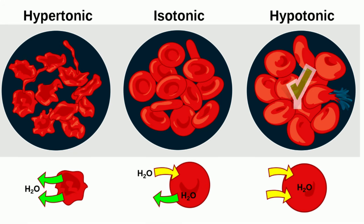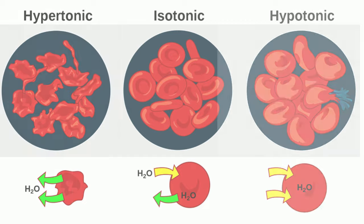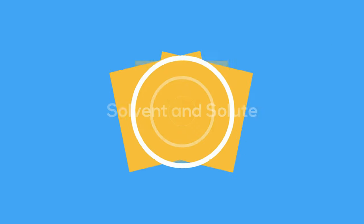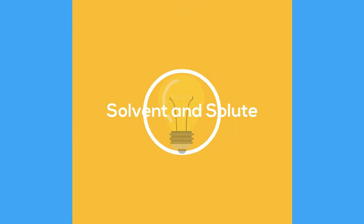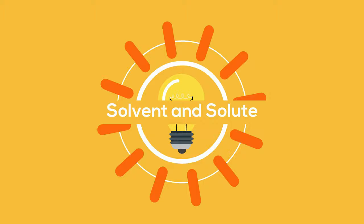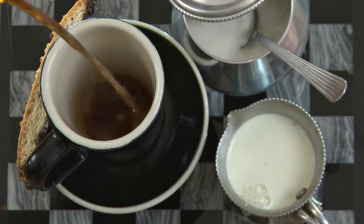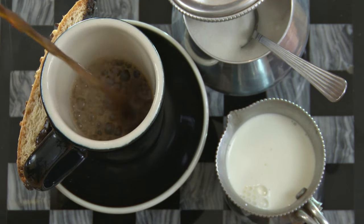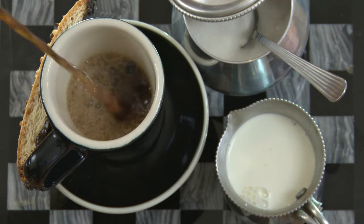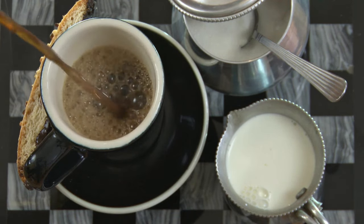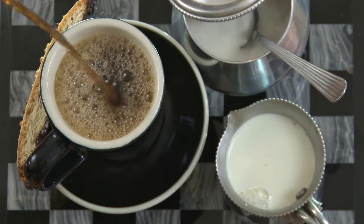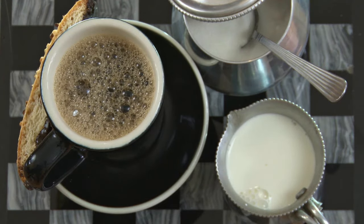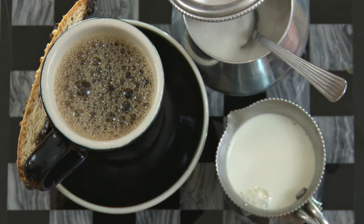To begin with, it will be helpful to know the difference between a solvent and a solute. Let's look at coffee. The solvent is what the solute is dissolved into. The water is the solvent, and the cream, sugar, and coffee are the solutes.